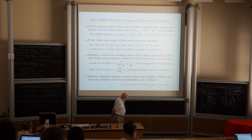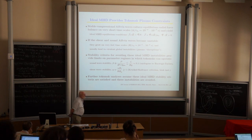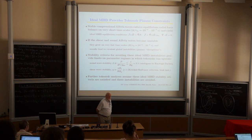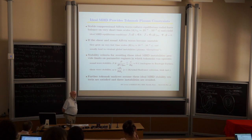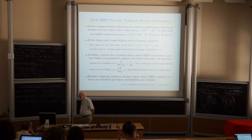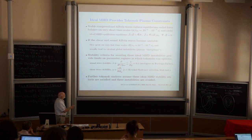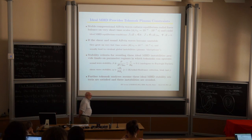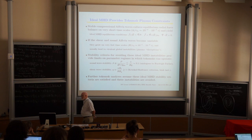Unstable shear Alfvén waves lead to very rapidly growing instabilities — microseconds, tens of microseconds. In tokamaks we actually have modes growing in 50 to 200 microseconds if you put too much pressure in the plasma. This produces the equivalent of a Rayleigh-Taylor instability — it's a sound wave instability if you put in too much pressure, roughly 10%.